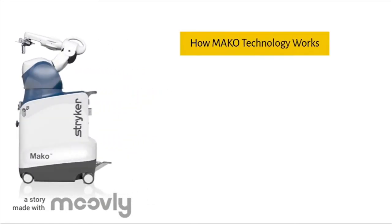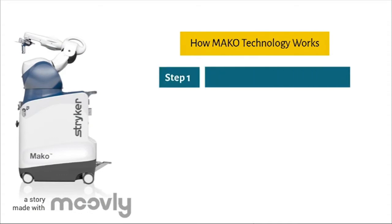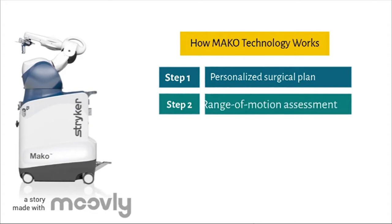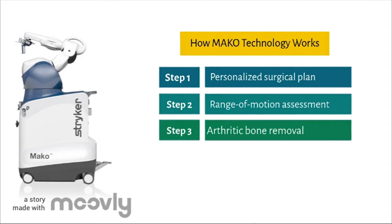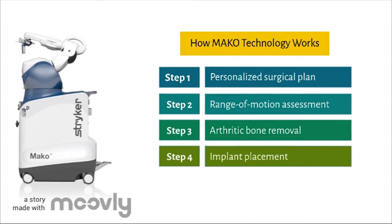There are four basic steps for using the Mako technology. Step 1: Preparing a personalized surgical plan. Step 2: Conducting a range of motion assessment. Step 3: Arthritic bone removal. And Step 4: Placing the implants in the joint.